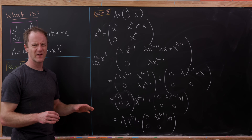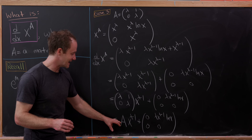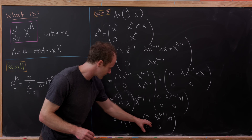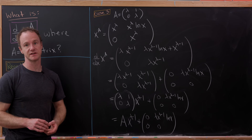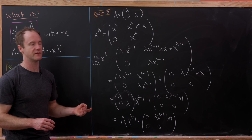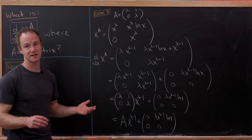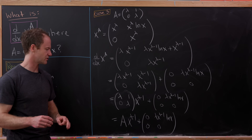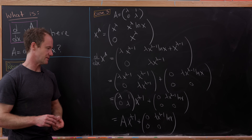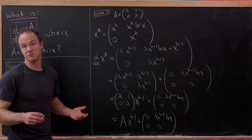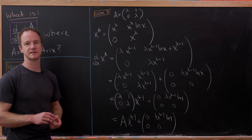Maybe as a follow-up question: is there a nicer way of writing the final answer for the derivative of x to a matrix when A is not diagonalizable? I have a feeling there might be, but I didn't really find one. And that's a good place to stop.